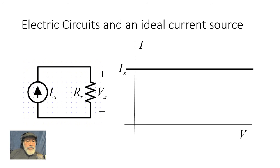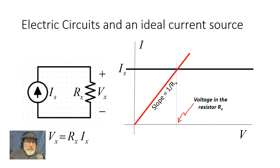But the relationship between Vx, the voltage in the resistor, and IX or IS, the current in the circuit, is given by Ohm's law. Graphically, that relationship is given by this red slanted line that has a slope 1 over Rx. The intersection of both characteristics gives us what is the actual voltage in the resistor.